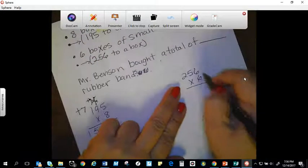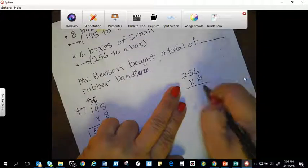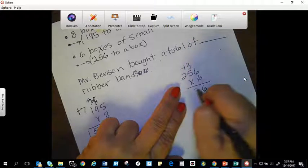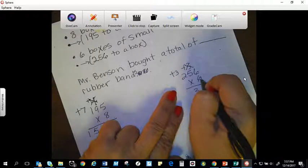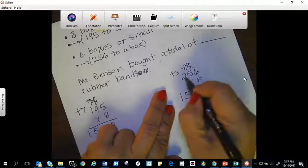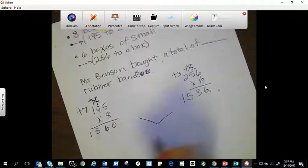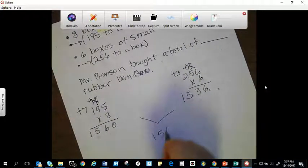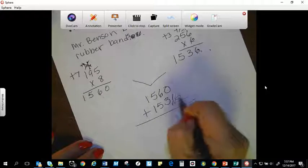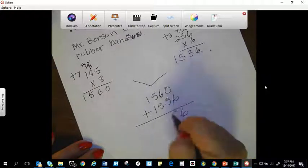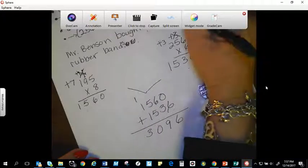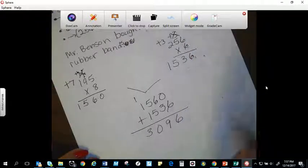For my small, I have six times six is 36. Six times five is 30, plus three is 33. Six times two is 12, plus three is 15. Now I'm going to take these two, and I'm going to add it up. So 1560 plus 1536. And that's going to equal to six plus zero is six. Six plus three is nine. Five plus five is 10. And three. So he bought 3096 rubber bands.